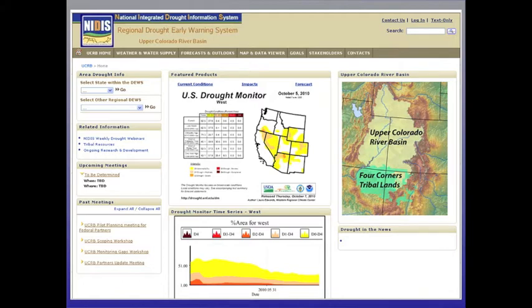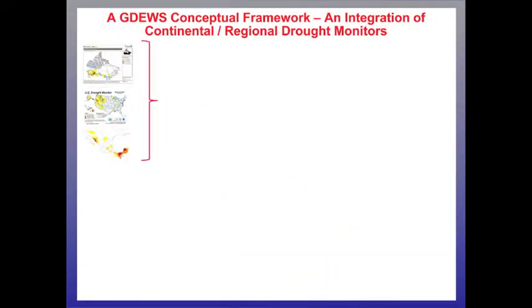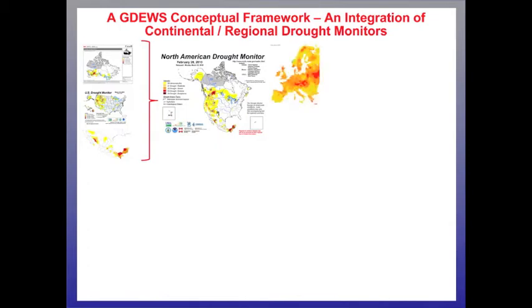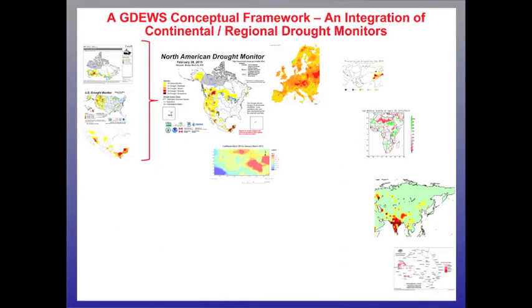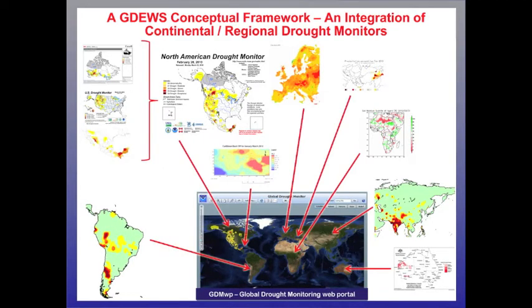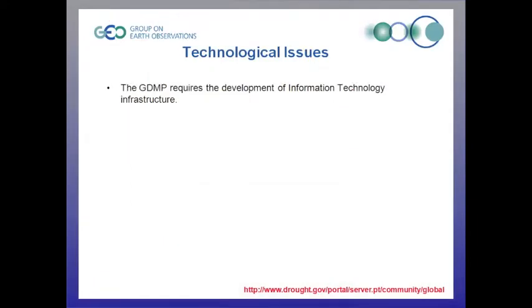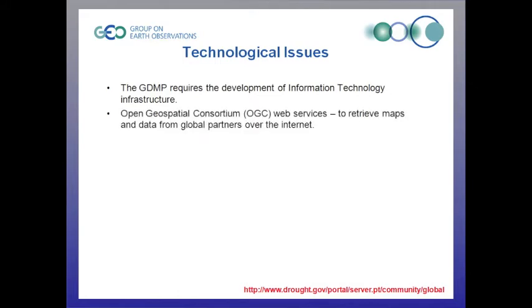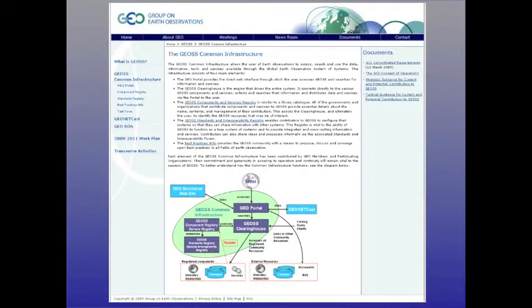From there, drought information is available on the national scale, and further drilling provides information specific to a state or river basin provided by more local authorities. This pass-through function will serve end users, such as farmers, and would be a cornerstone of a fully functioning Global Drought Portal. The Global Drought Monitor aids capacity building by fostering development of regional drought monitors, suited to the needs and resources of the region or continent, as long as interoperability with globally consistent drought indicators is maintained. The Global Drought Monitor requires the development of information technology infrastructure, like web services and internet data transmission, so that near-real-time data from hydrometeorological services and GEO member states can be retrieved and combined into a map of current conditions.